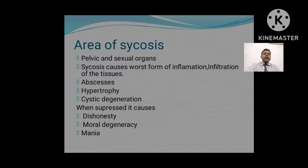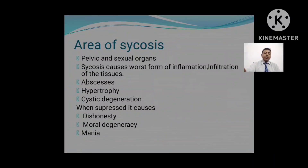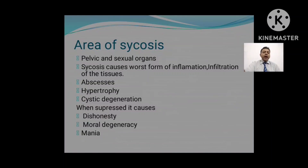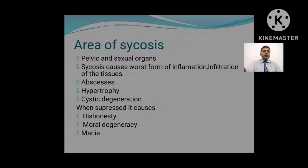The area of Sycosis is the pelvic and sexual organs. Sycosis causes the worst form of inflammation, infiltration of the tissues; it causes abscesses, hypertrophy, and cystic degeneration. The primary manifestation of Sycosis is a cauliflower-like growth. When Sycosis is suppressed severely, mental conditions are affected and the patient may develop dishonesty, moral degeneracy, and mania. When suppressed, it may affect the patient in the heart centers and the mind such that all morality of the patient may be gone.